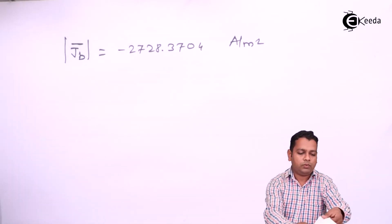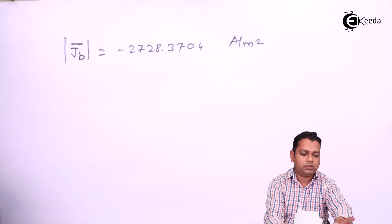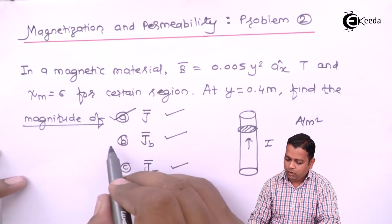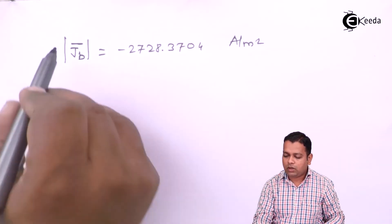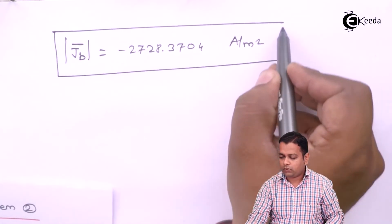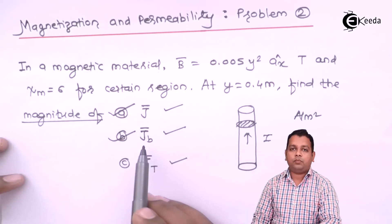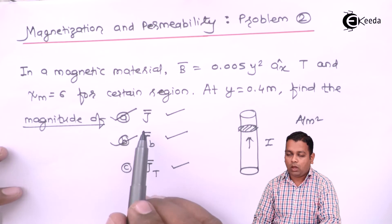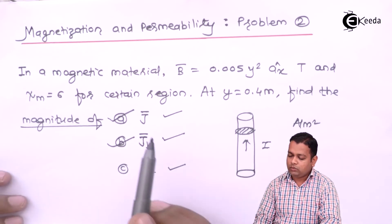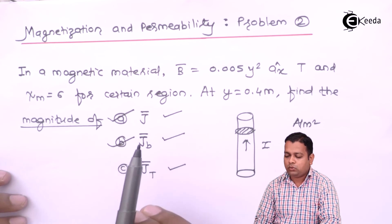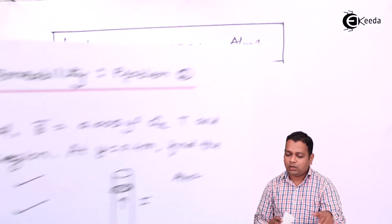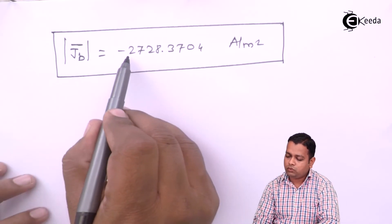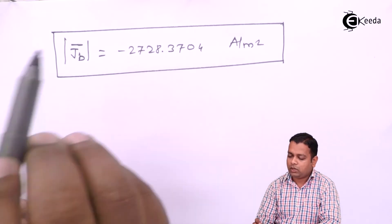So for part B we have determined the magnitude of JB̄ as −2728.3704 A/m². In parts A and B, the negative sign represents direction. If only magnitude is needed, you can take the positive values: 454.7284 A/m² for part A and 2728.3704 A/m² for part B, neglecting the minus sign.